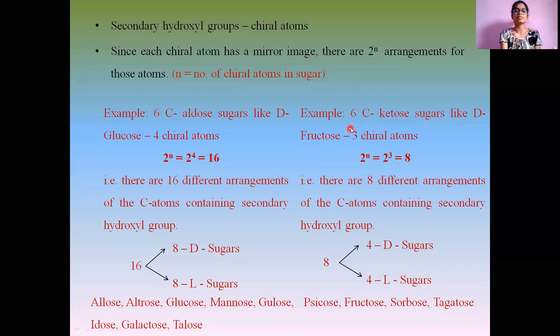Similar is seen for a 6-carbon hexose-ketose sugar like fructose, which has 3 chiral atoms. 2^3 gives 8. Totally there are 4 types of hexose-ketose sugars: psicose, fructose, sorbose, and tagatose. When these 4 sugars exhibit 2 different forms, the D form and the L form, you totally get 8 different types of arrangements of this carbon atom.